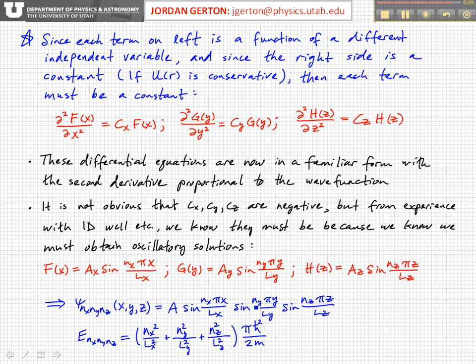So again, nx, ny, and nz can take on any integer value that's at least one. And by analogy with the 1D case, we can see that the energy eigenvalues will be nx squared over lx squared plus ny squared over ly squared plus nz squared over lz squared, times the quantity π h-bar squared over 2m.